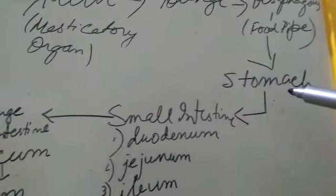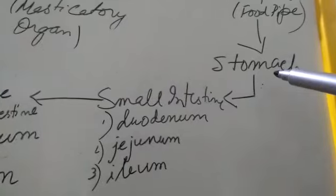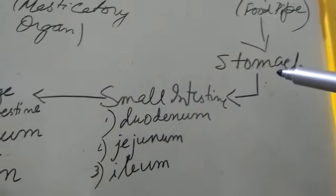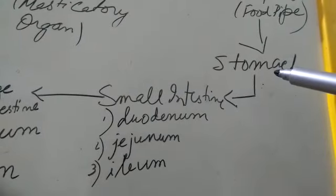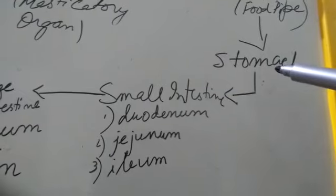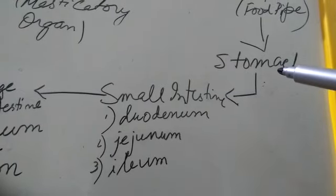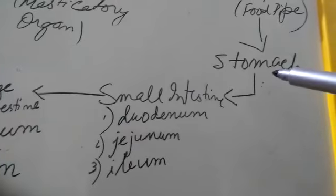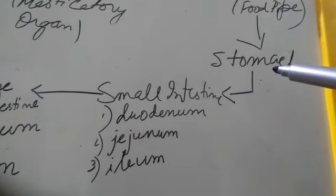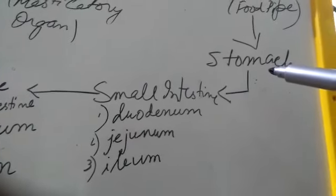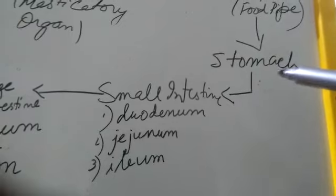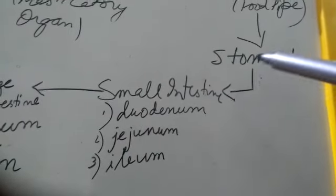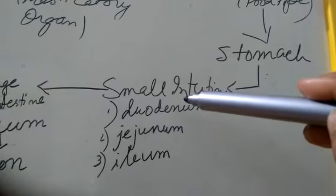The stomach is a temporary storage bag that stores food for about two to three hours until it's digested. In the stomach, proteolytic enzymes like pepsin and hydrochloric acid mix with the food. After this temporary storage, food moves to the small intestine.